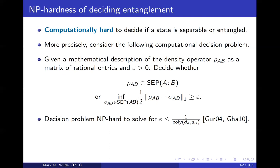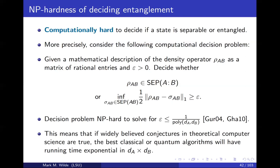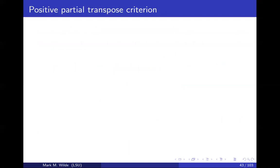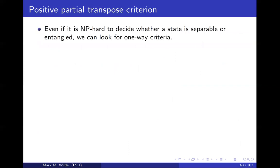So what does that mean? Well, in general, it's going to be hard to decide whether a state is separable and entangled. So it's kind of a bummer, but I guess that's just the reality. The implication is that this problem is going to be hard to solve for both classical and quantum computers.